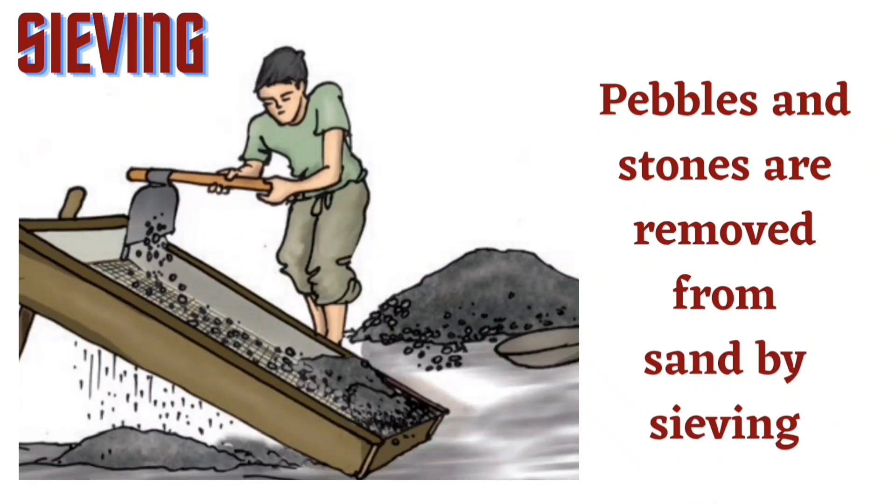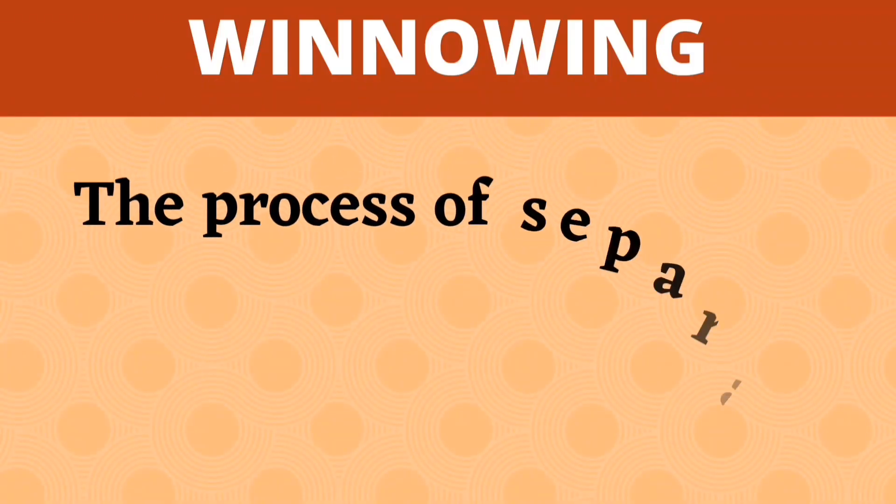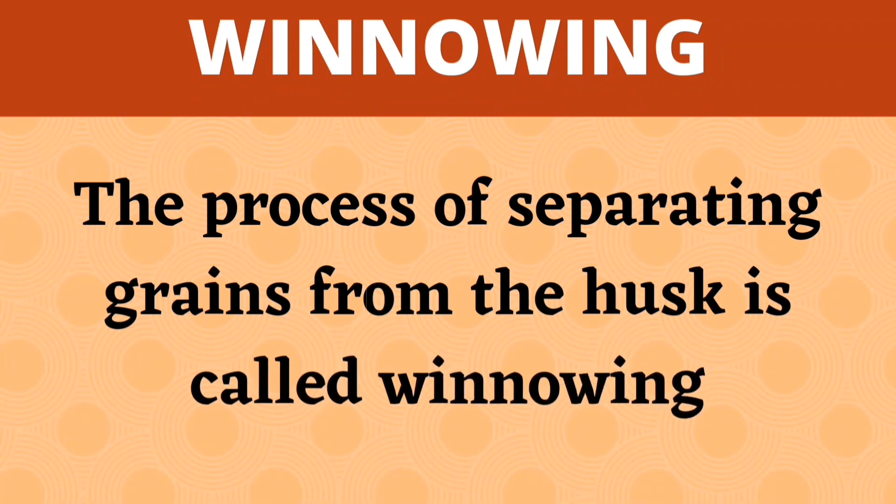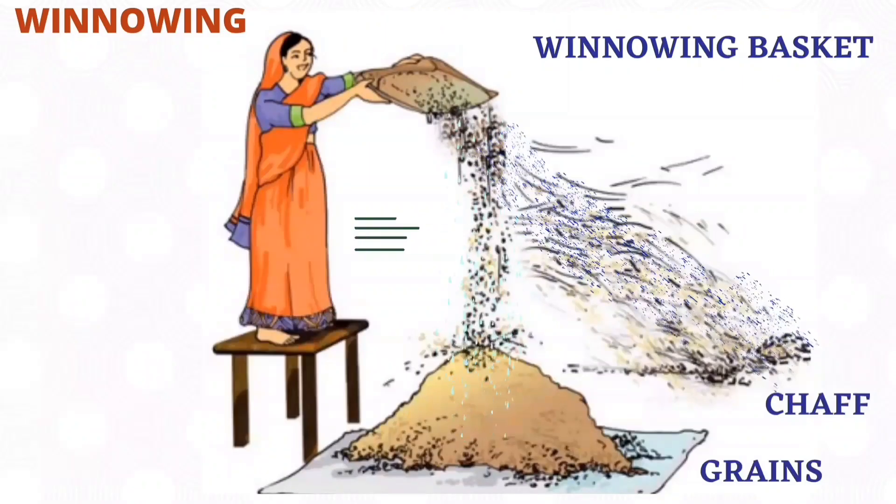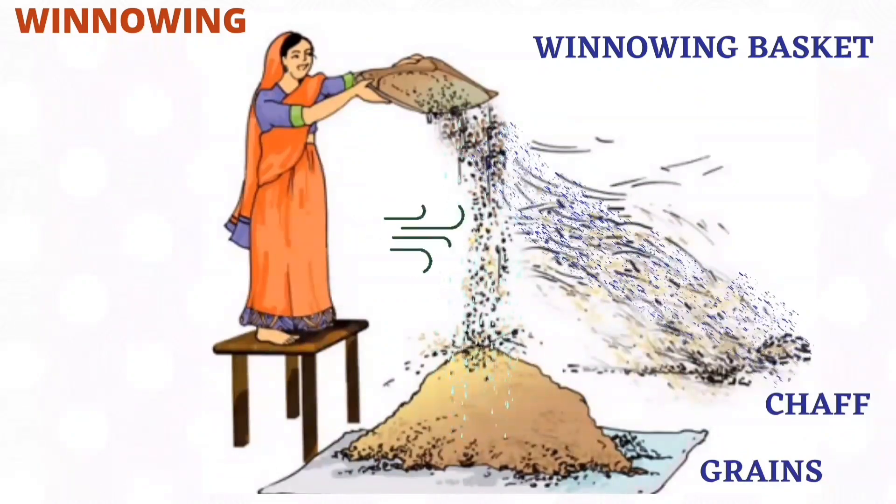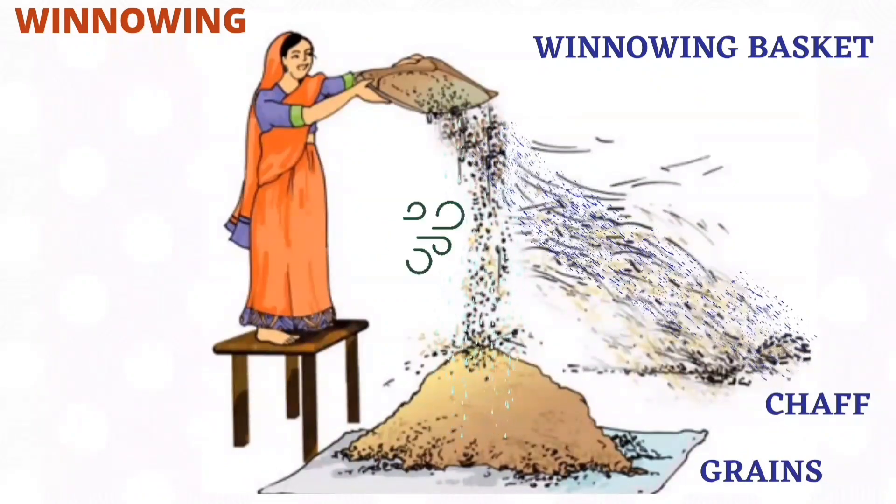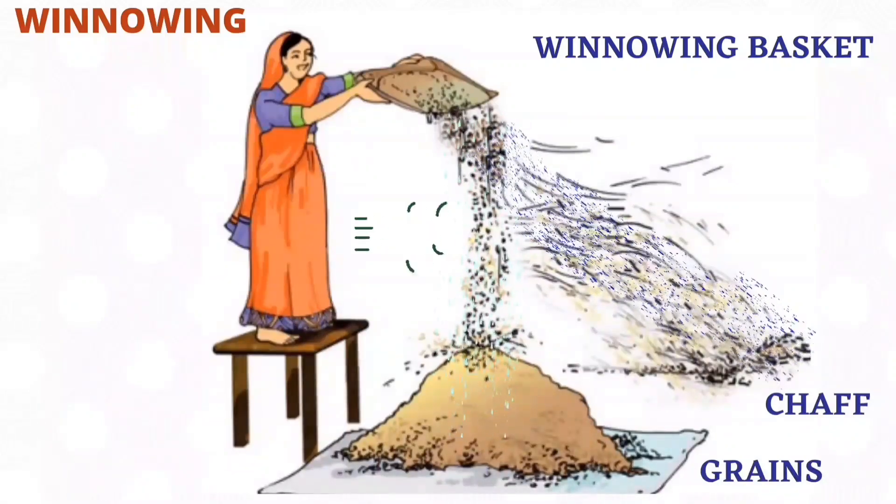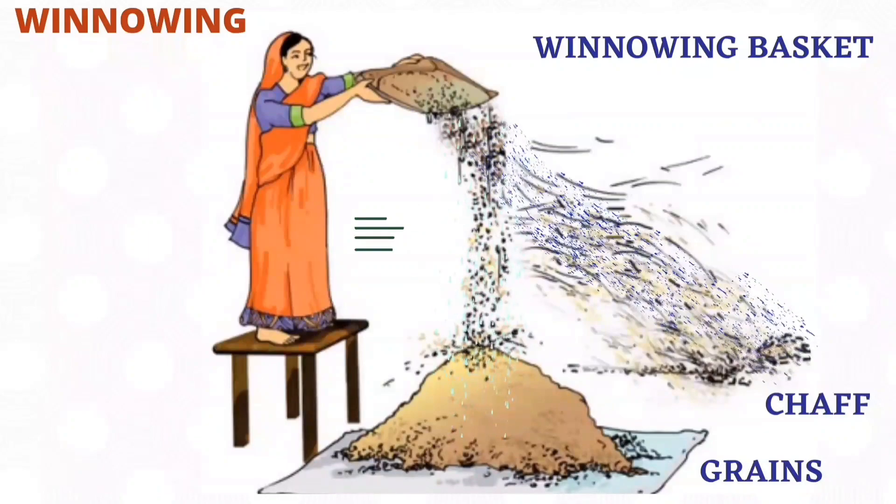Winnowing is used to separate husk from grains by wind or blowing air. First, the mixture of husk and grain is taken in a winnowing basket. The farmer stands at a higher level and lets the mixture fall to the ground. Grains are heavier than husk, so they fall almost vertically, while the husk is carried away by the wind.